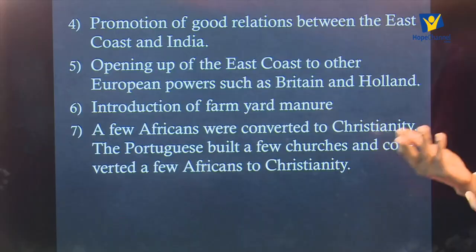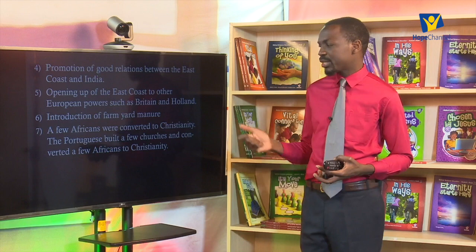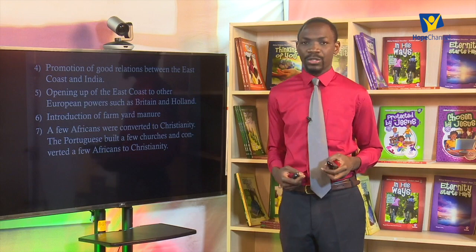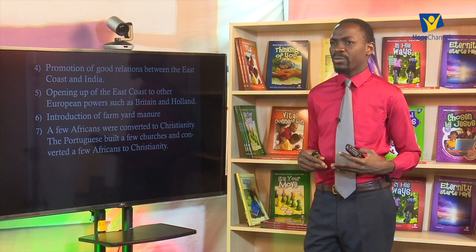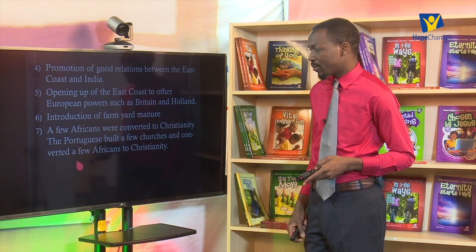Number seven, a few Africans were converted to Christianity. Those Africans who were appealed to the religion of Christianity — the Portuguese were able to build a few churches and convert a few Africans. Their intentions were good — they wanted to convert people to Christianity — but their approach was wrong, using harsh, ruthless, and brutal means. That is why they were not very successful in converting many, but a few Africans were indeed converted.